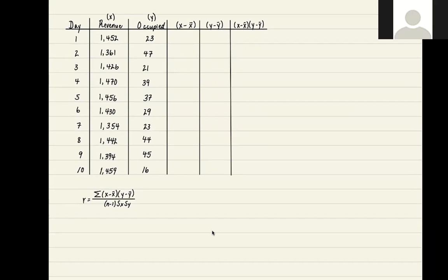So to save time, I calculated x bar ahead of time, it is 1424.4. And our y bar is 32.4. So all I did was add up all of these numbers and divide by 10. These are the averages. So now I'm going to be taking the number in the first column minus my x bar. So for the first number, it's going to be 27.6, negative 63.4.